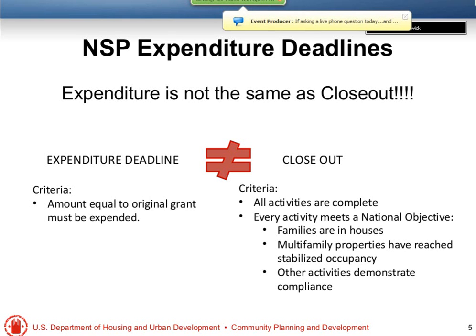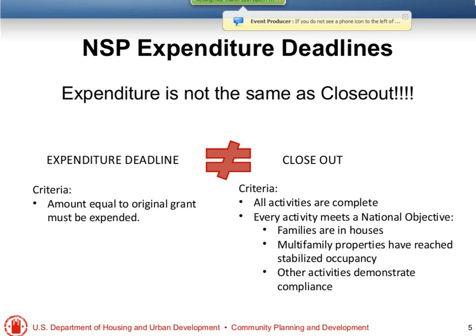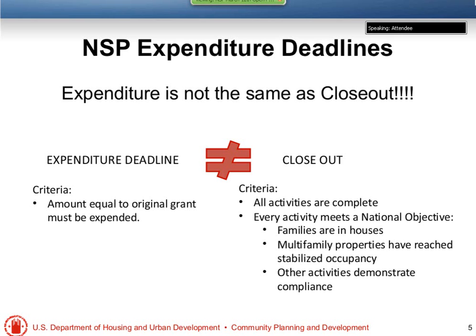I just want to talk quickly about the expenditure deadline. Expenditure deadline is not closeout. All you need to do for the expenditure deadline is have an invoice for completed work. At closeout, you need to have somebody — for instance, if you acquire and rehab a home — you need to have somebody in that home living there to meet a national objective. So expenditure deadline means you've paid for the acquisition and rehabilitation of the home; closeout means putting somebody in the house and meeting a national objective.